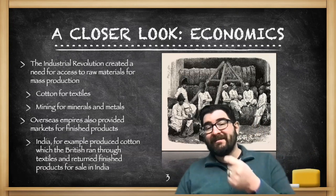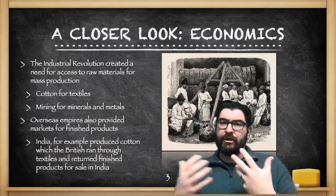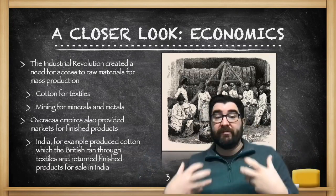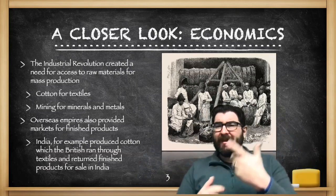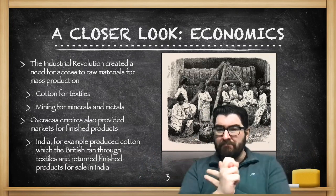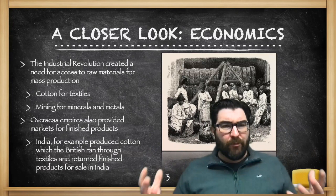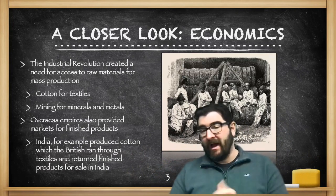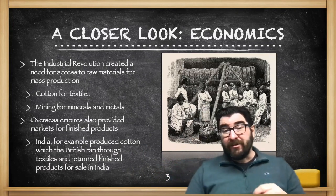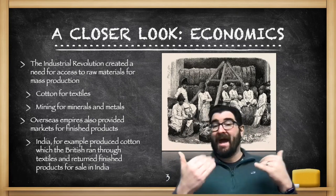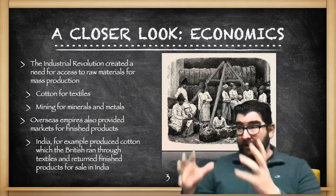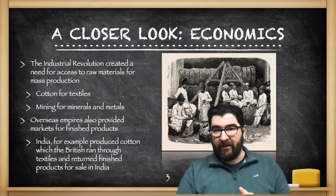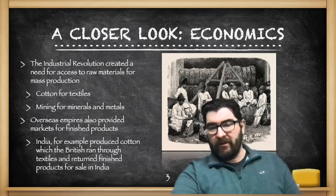The Industrial Revolution creates a need for access to raw materials that European countries can't acquire within their own borders — things like cotton for textiles, mining for minerals and metals. Think about the tremendous amount of copper wiring needed for telegraphs, for example. Overseas empires can provide those raw materials and also markets for finished goods. For example, India produces cotton taken by the British through their textile mills and then returned to India for sale.